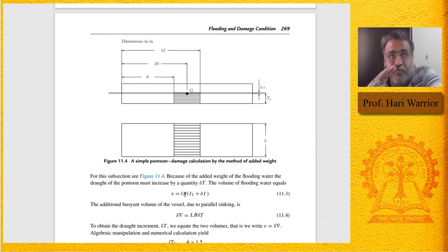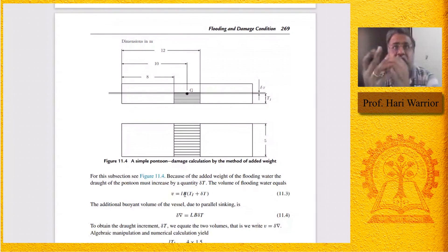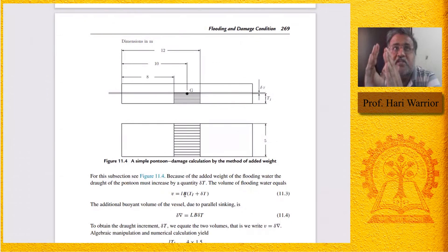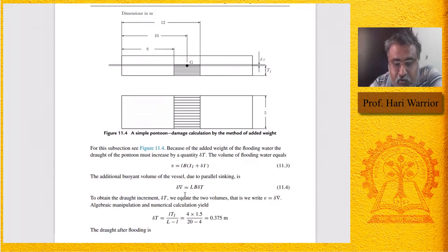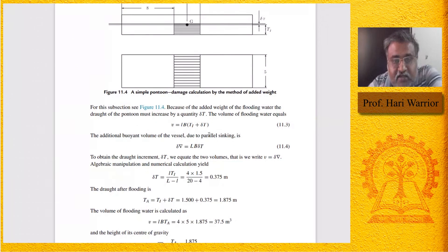The increase in volume of the ship equals the volume of flooded water, because the final displacement equals the initial displacement plus the volume of flooded water — so the increase in displacement equals the displacement of the flooded water. By equating the volume of flooded water (l × B × T_A) to the increase in ship volume from parallel sinkage (L × B × ΔT), we get ΔT.